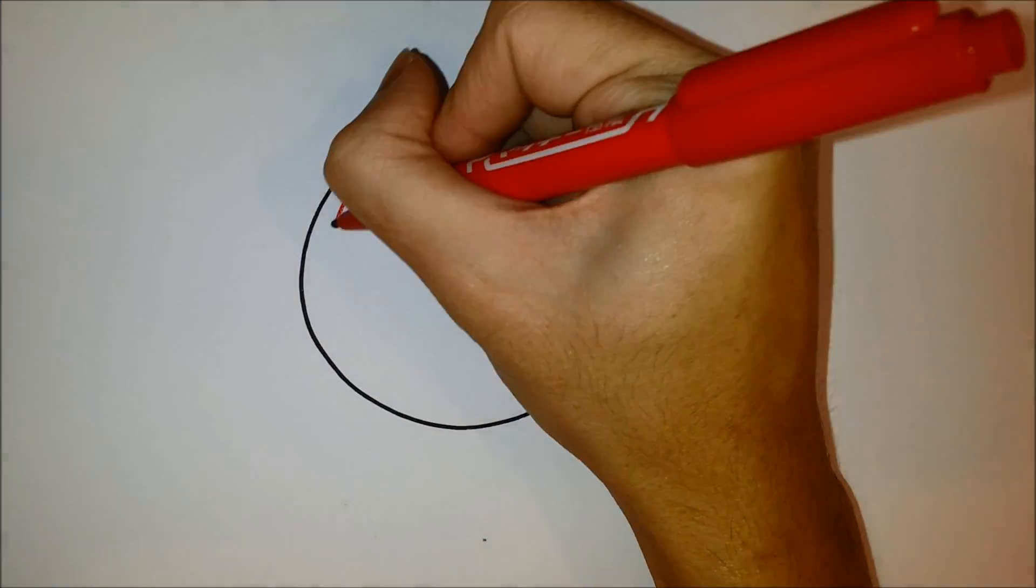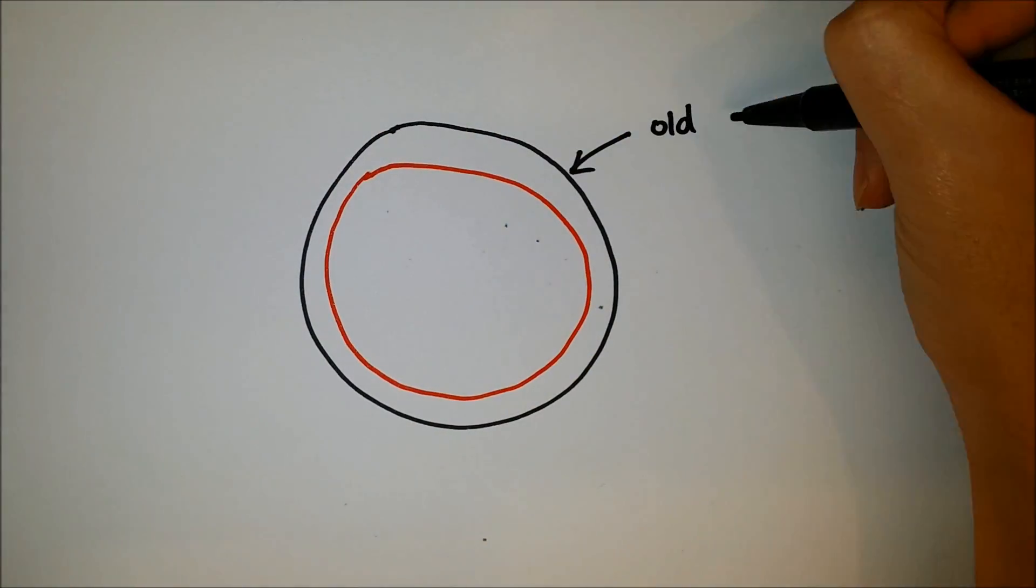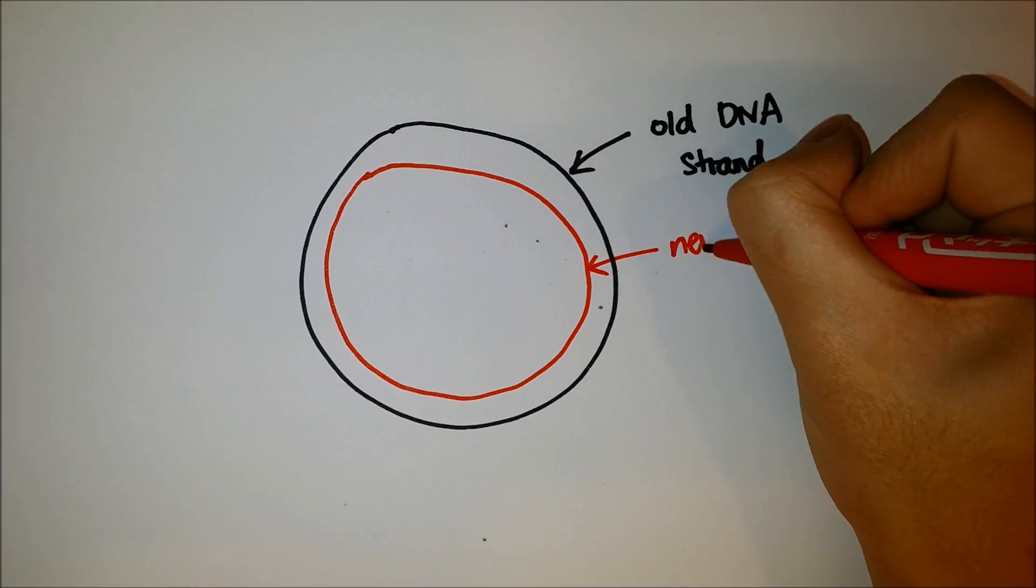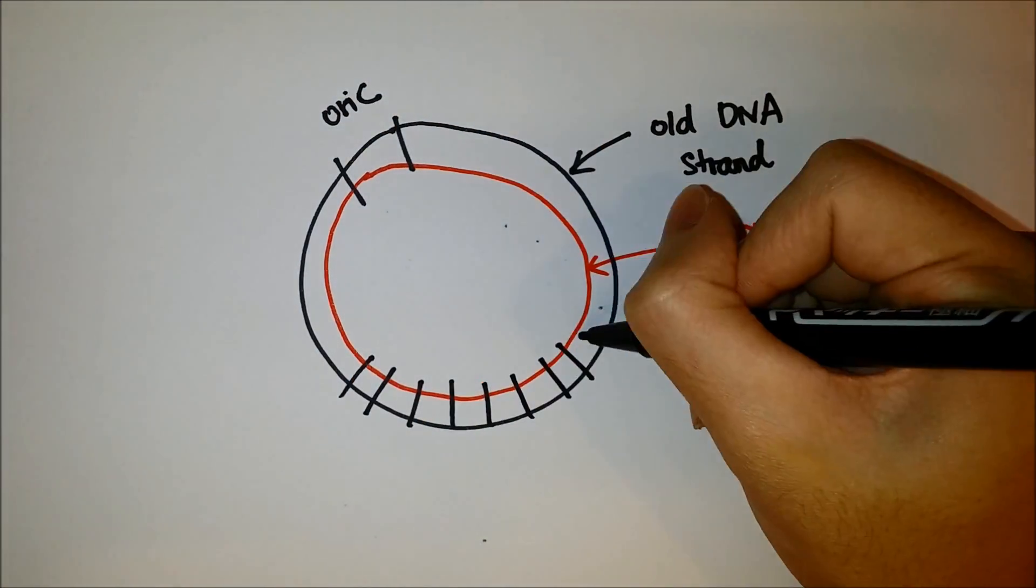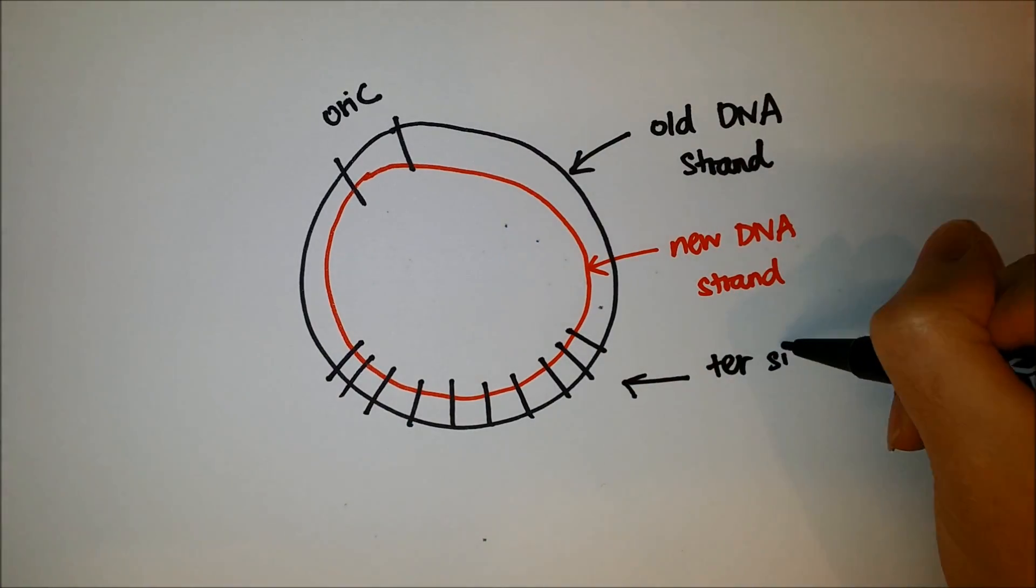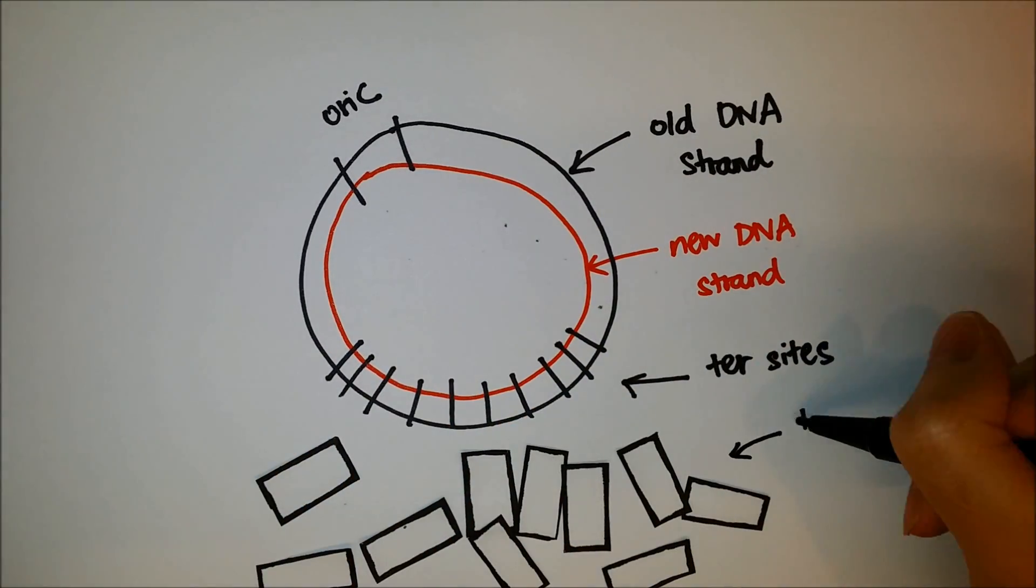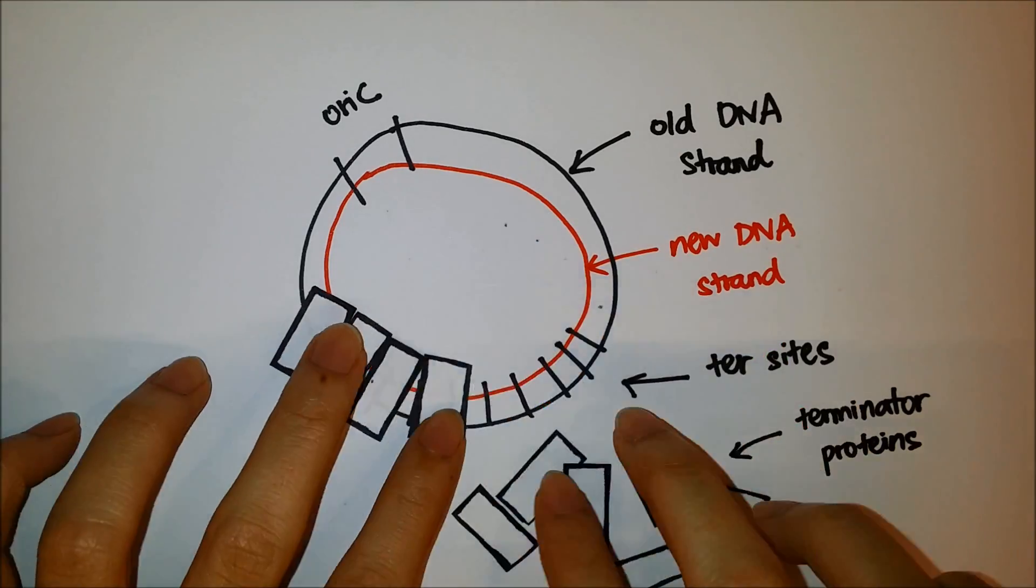When DNA replication is complete, the process has to be terminated. Termination occurs at a series of sites opposite the origin of replication. These sites are known as ter sites. Terminator proteins bind to these sites, resulting in termination.